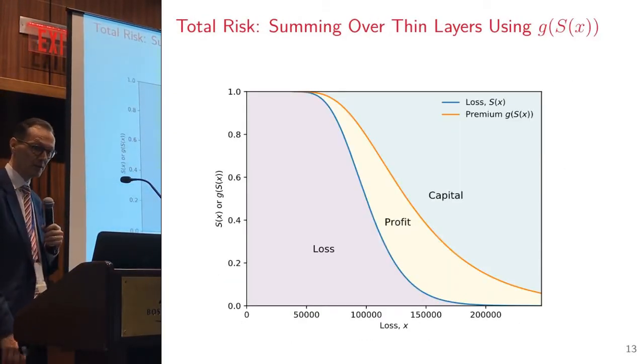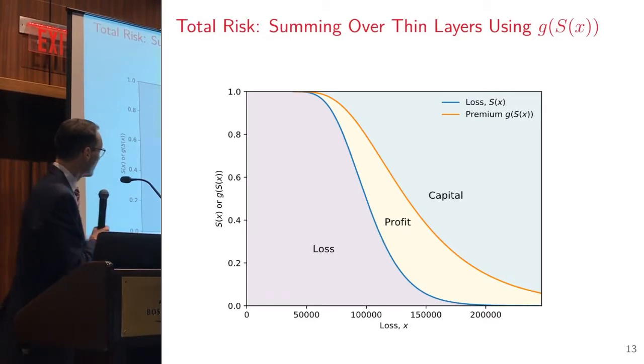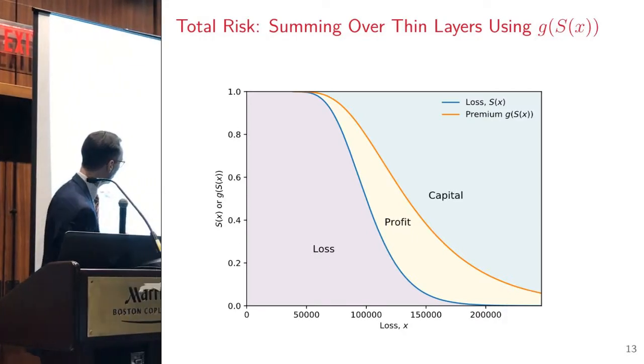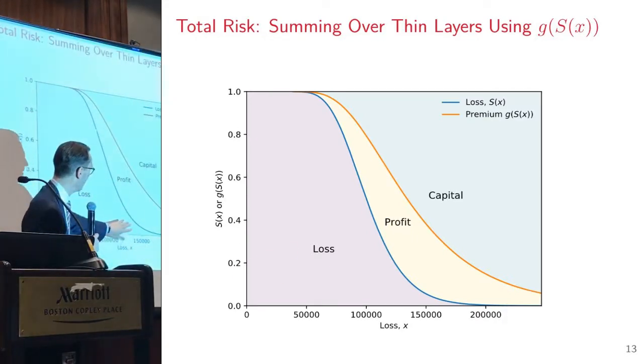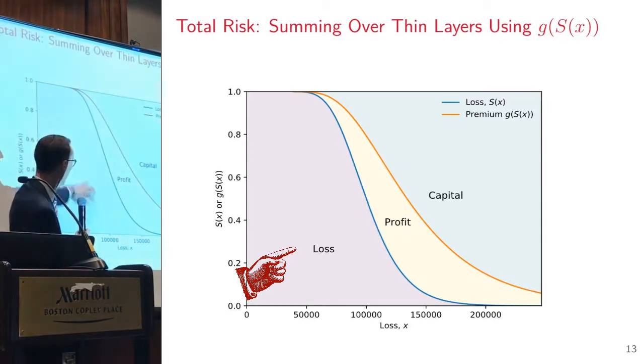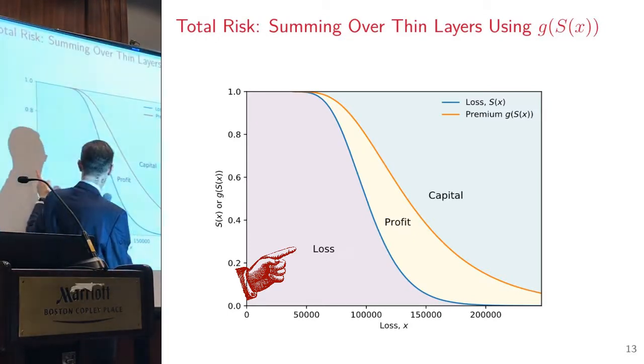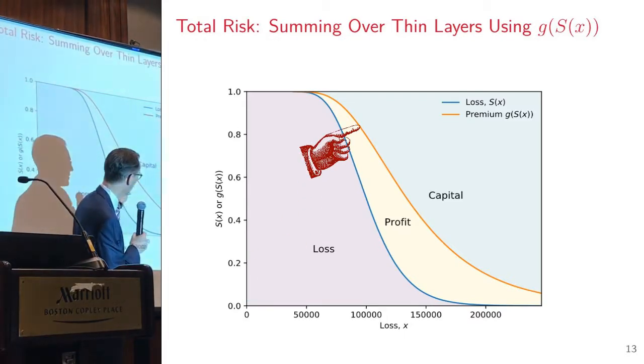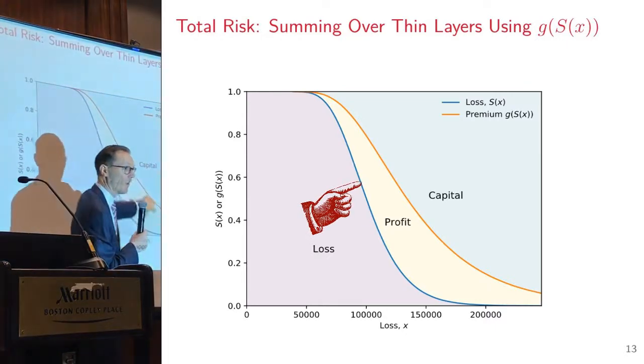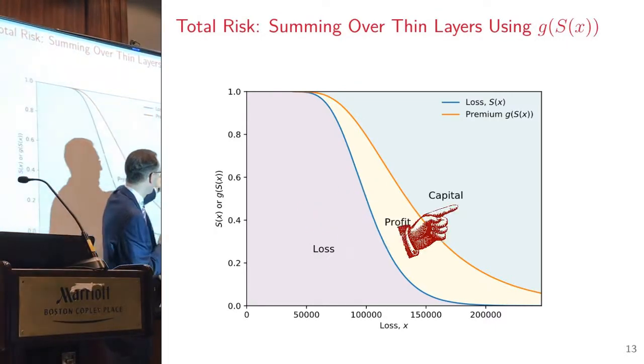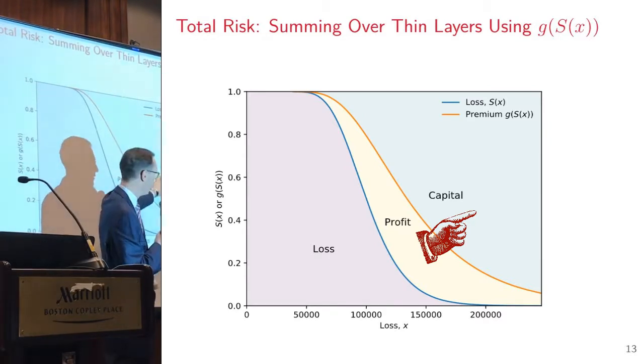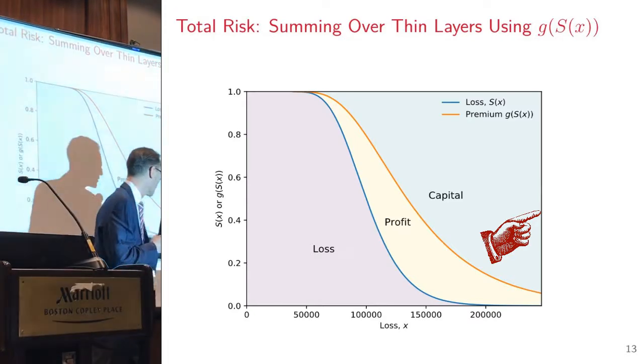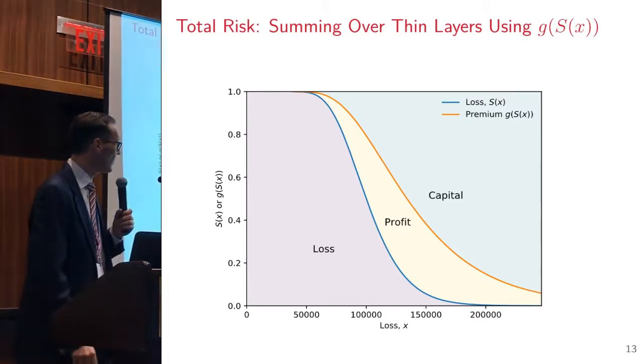What does this look like? This is a Lee diagram you're possibly used to. For each loss amount I increase, this is S(x), this is g of S(x) which is a larger amount. This difference in here is my profit component. And then this piece up here is the extra capital that I'm needing to raise. I'm assuming that my policy is backed by some overall aggregate limit of like two and a half million dollars or something. So those are the three pieces.